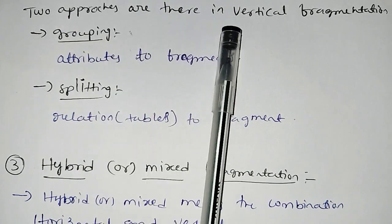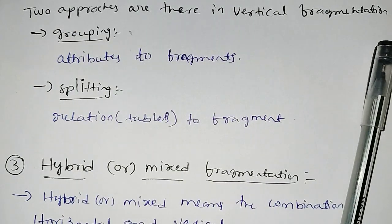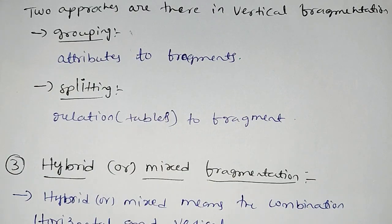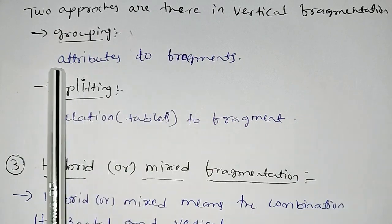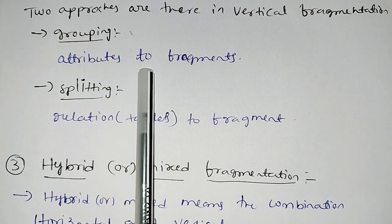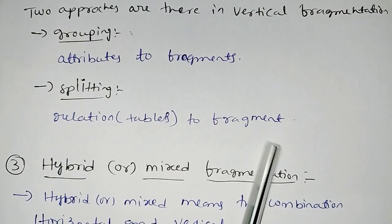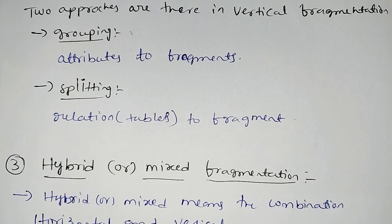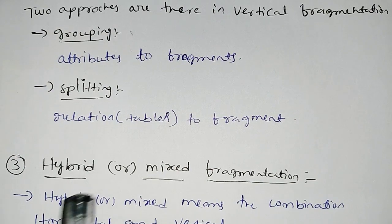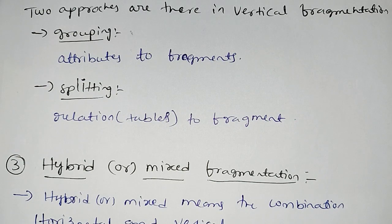There are two approaches in vertical fragmentation: grouping and splitting. Grouping means assigning attributes to fragments. Splitting means dividing a relation into fragments. Grouping starts with attributes and builds fragments; splitting starts with the complete relation and divides it into components.